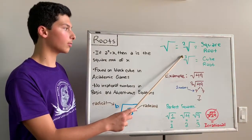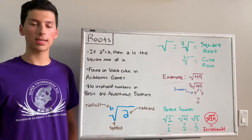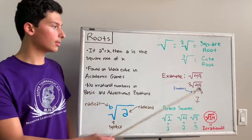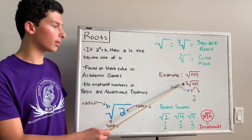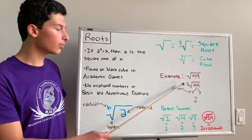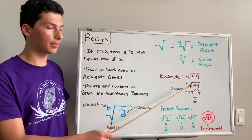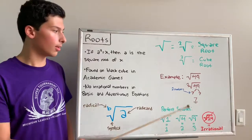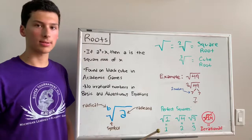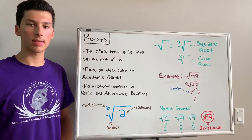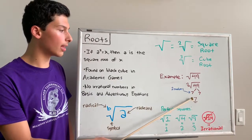To understand more clearly, let's look at an example: the square root of 49. Since there's no radical, we assume it's 2. Since the radical is 2, we need two numbers that are the same and multiply to get 49. We can see that 7 is the answer — 7 multiplied by itself twice gives 49. So 7 is the answer.